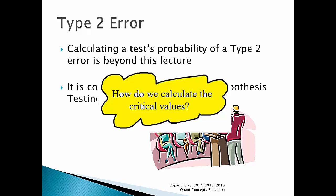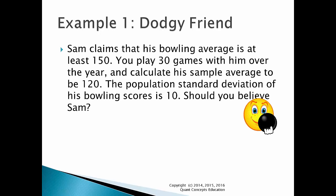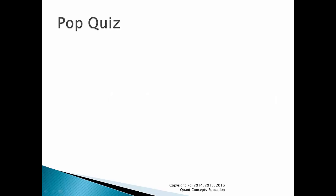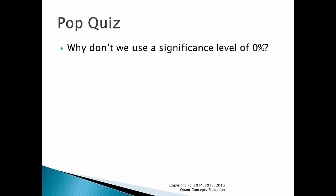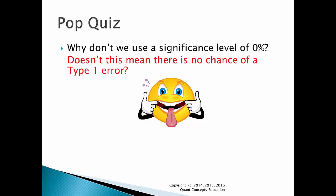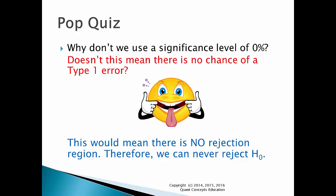This is the exam question version of our bowling example with Sam. Sam claims that his bowling average is at least 150. You play 30 games with him over the year and calculate his sample average to be 120. The population standard deviation of his bowling scores is 10. Should you believe Sam? Use a significance level of 5%. Notice how we've given you some more information and parameters. Pop quiz: Why don't we use a significance level of 0%? Recall that the significance level denotes the probability of a type 1 error — doesn't a significance level of 0% mean there is no chance of a type 1 error? Unfortunately, using a significance level of 0% is a bad idea, because this would mean there is no rejection region, so we would never reject the null hypothesis. It's a useless test if we only always have the same outcome.